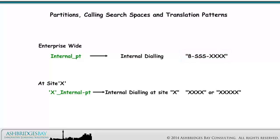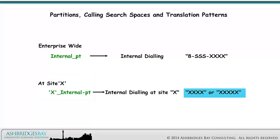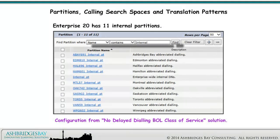Each Site X will have an internal partition — X Internal Partition — for internal dialing at Site X using Site Abbreviated Patterns. Enterprise 20 has 11 internal partitions. This is the configuration from the No Delayed Dialing Blocking Online's Class of Service solution.